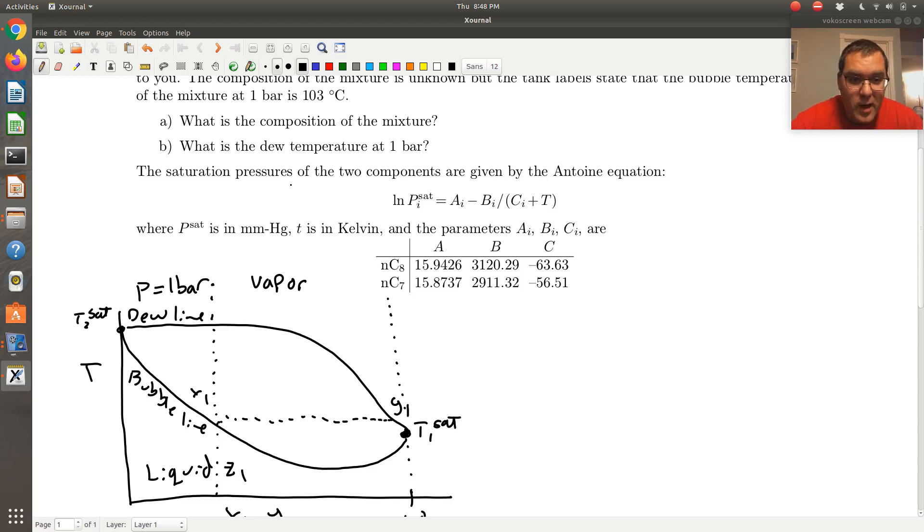So how I would do that is a bubble P calculation just like we just looked at in problem one. So at my bubble line, I have a system at two-phase coexistence. So Raoult's law should definitely be applicable here. So my isofugacity equation will take the form of Y1*P is equal to X1*P1^sat. Y2*P is equal to X2*P2^sat.